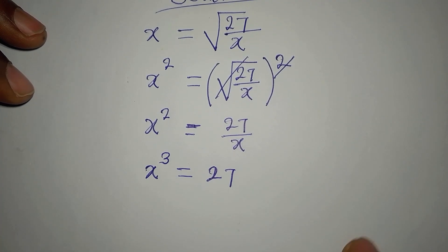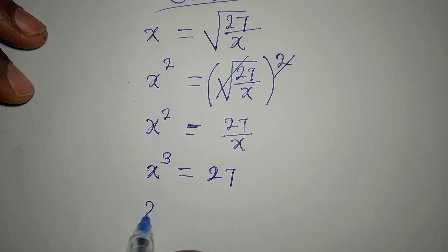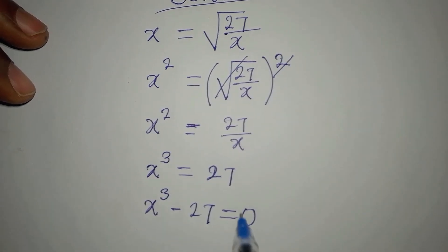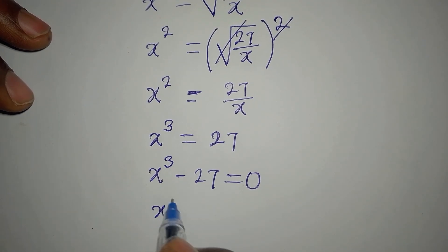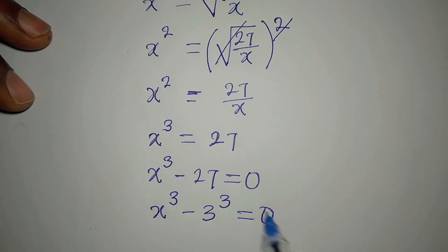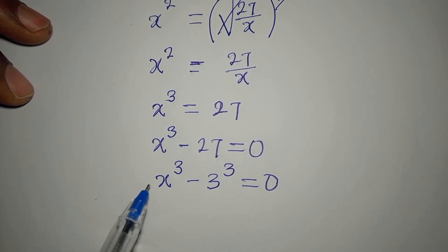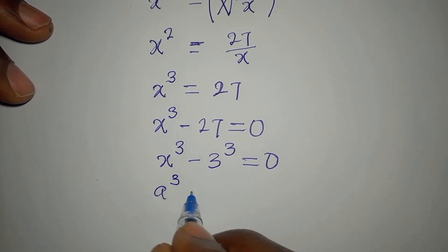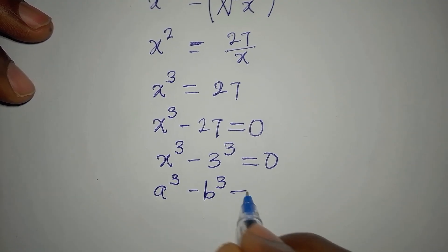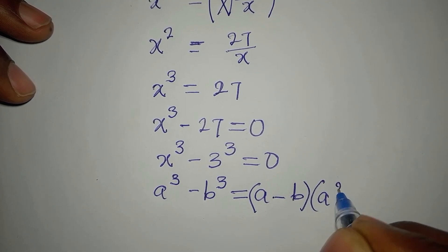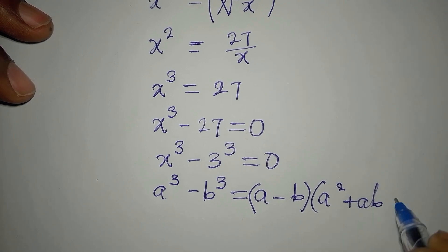To get three solutions we rearrange to x cubed minus 27 equals 0. Since 27 is 3 to the power of 3, we can apply the difference of two cubes. The formula is: a cubed minus b cubed equals (a minus b)(a squared plus ab plus b squared).